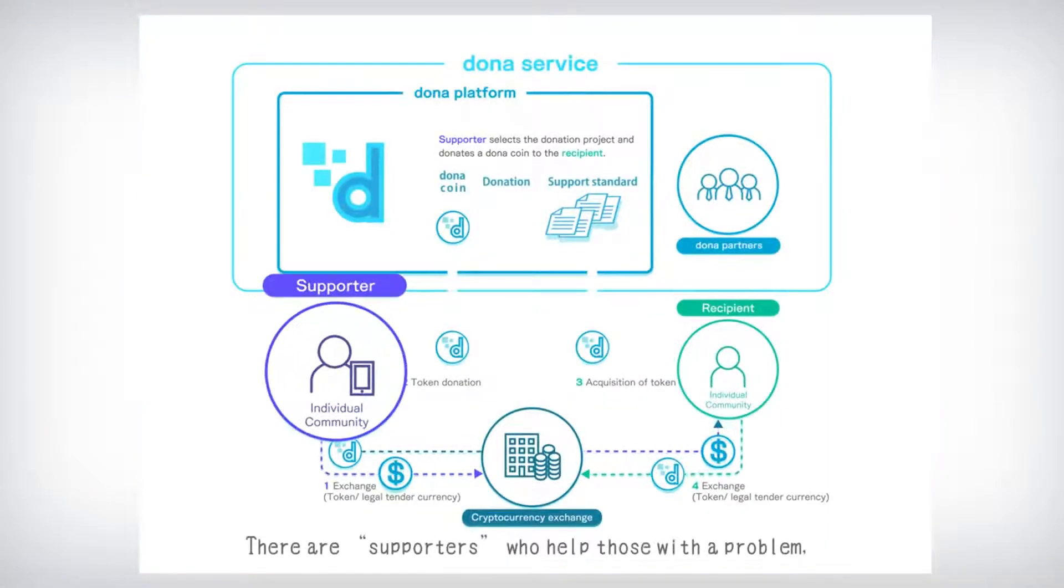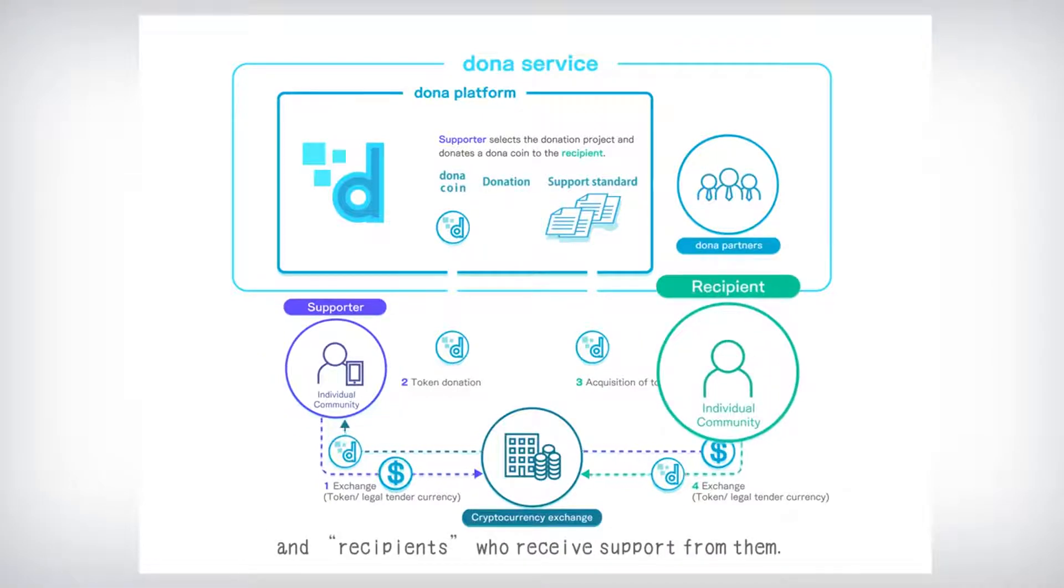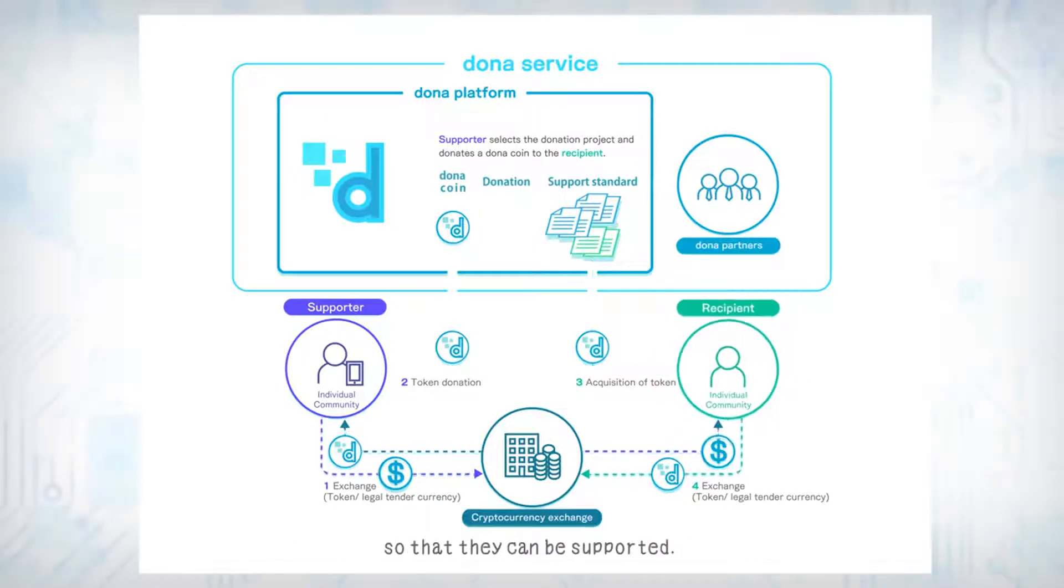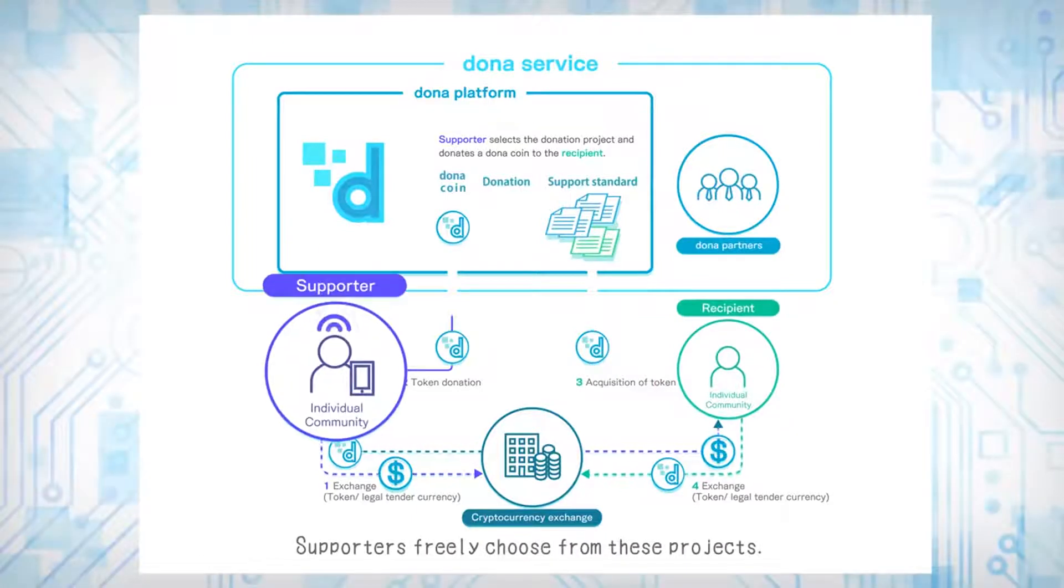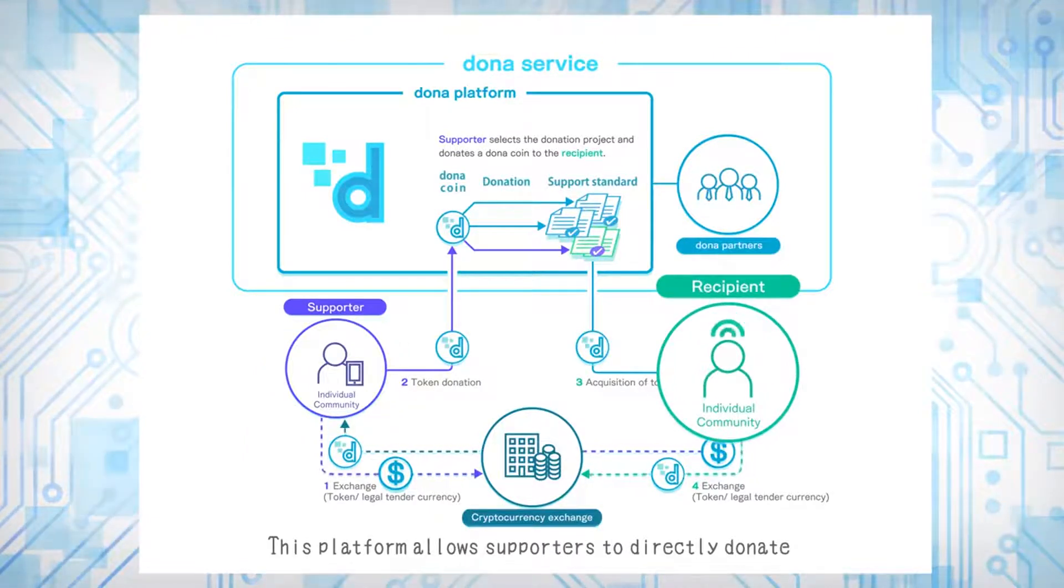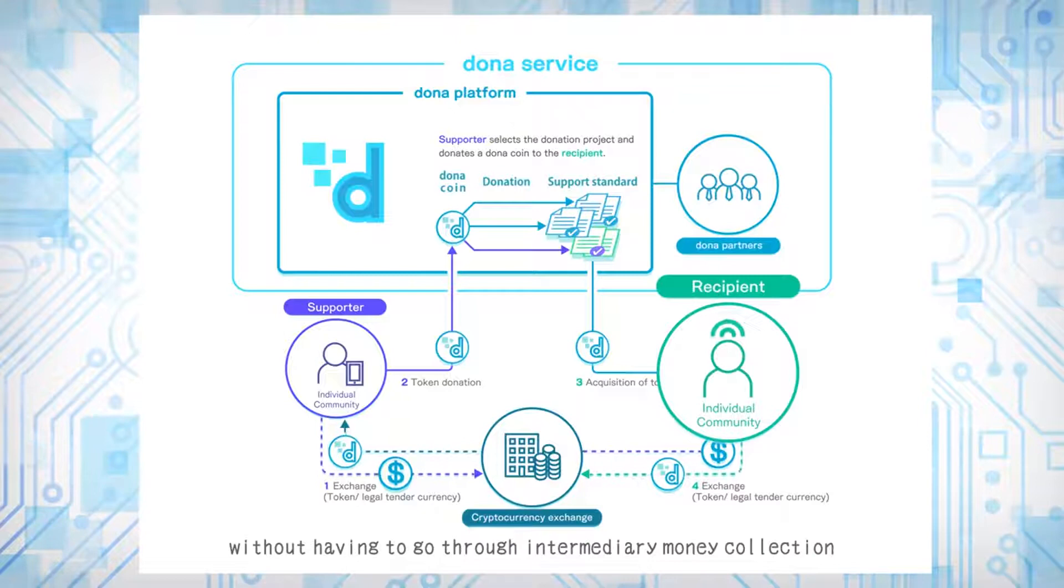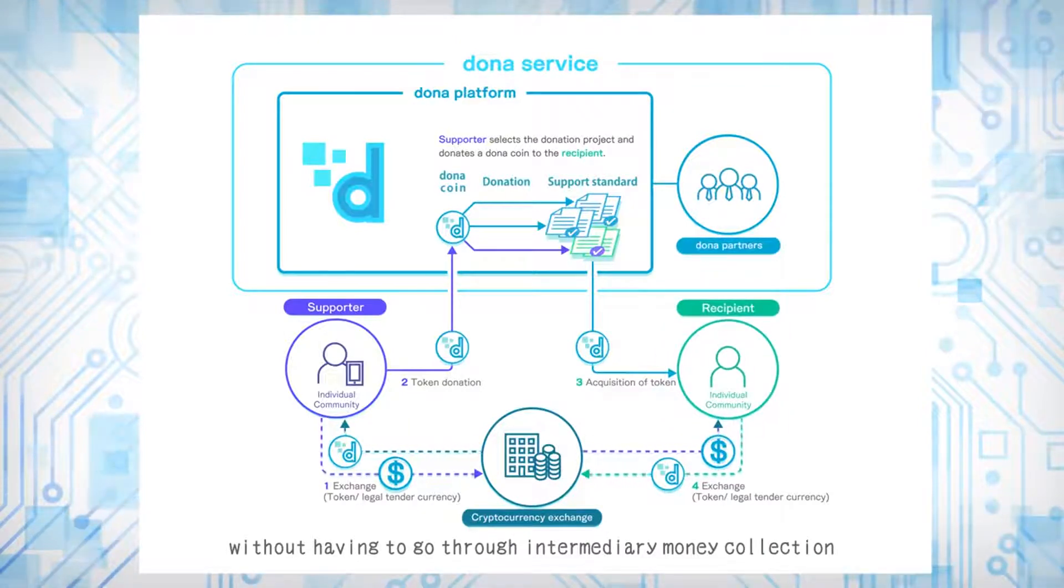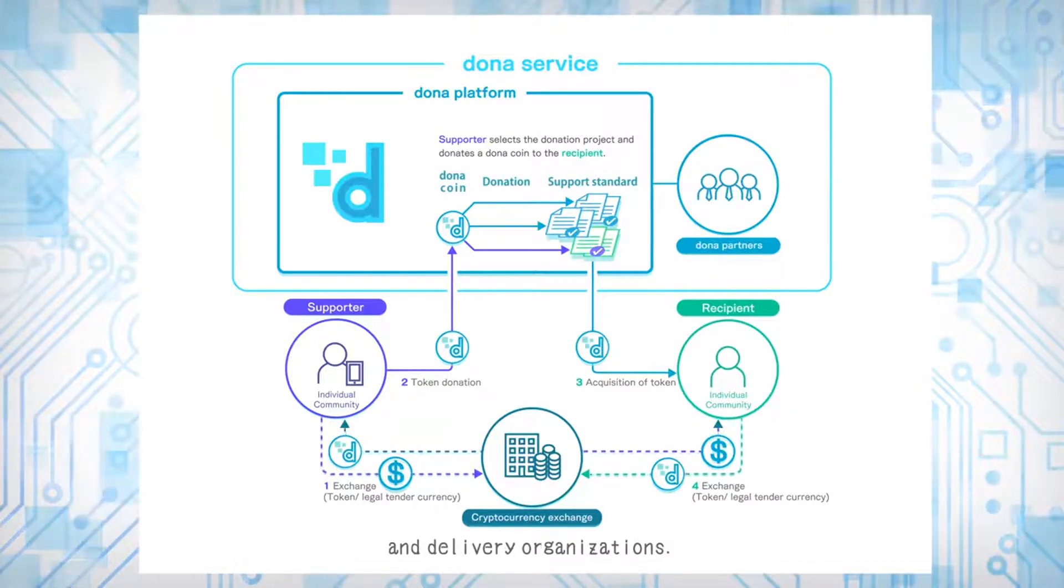There are supporters who help those with a problem, and recipients who receive support from them. Recipients create projects and register them on the Dona platform so that they can be supported. Supporters freely choose from these projects. This platform allows supporters to directly donate without having to go through intermediary money collection and delivery organizations.